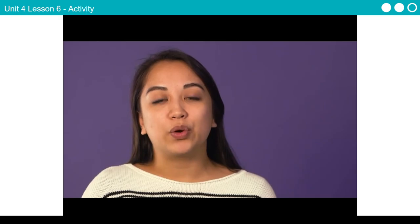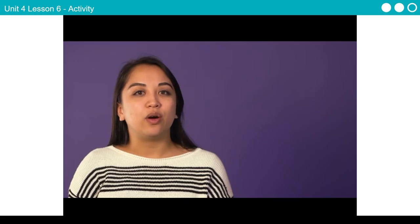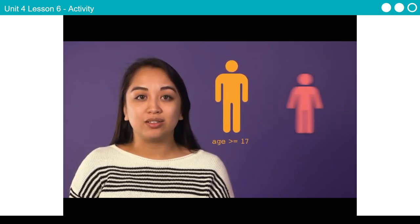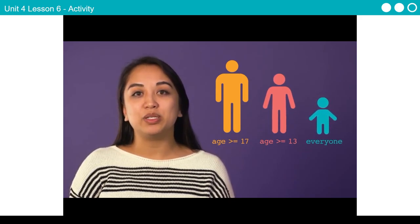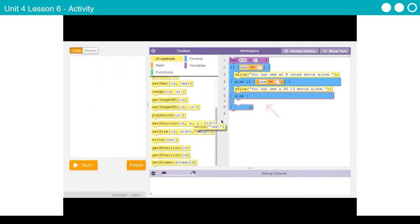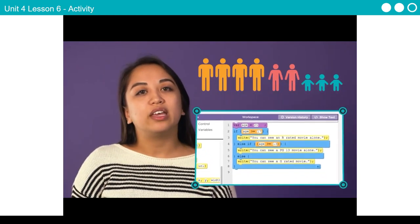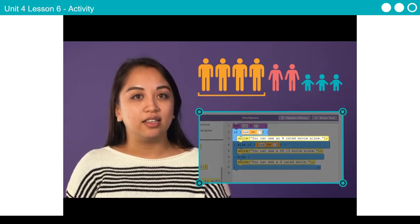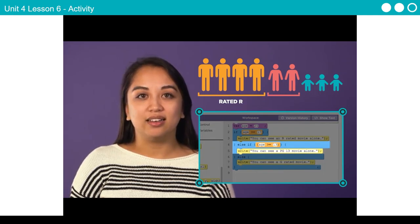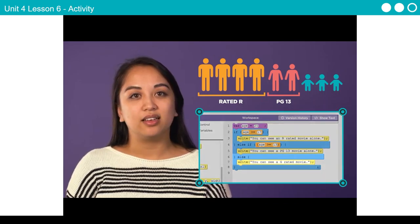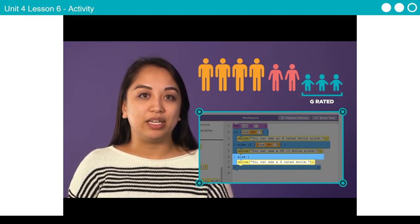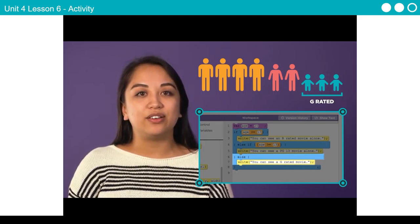Sometimes the decisions you will want your program to make have more than two possible outcomes. Let's continue our movie rating example — checking whether the highest rating you can see alone is an R-rated movie, a PG-13 movie, or just a G-rated movie. To check between these three different cases, we can add an else-if statement. An else-if statement is another condition the program checks only if the previous if statements were false. So: if age >= 17, write that the user can see an R-rated movie alone. Else if age >= 13, write PG-13. Else, write G-rated. The else condition becomes the default when all previous if and else-if statements are false.